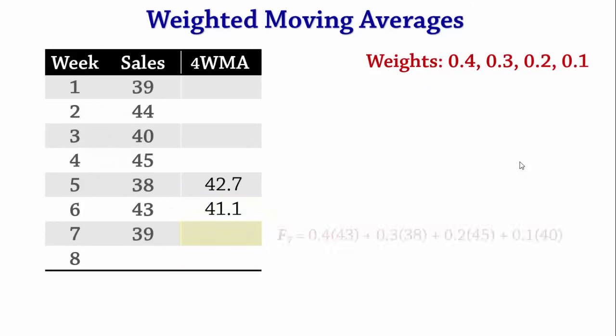For week 7, the Weighted Moving Average is 0.4 times 43, plus 0.3 times 38, plus 0.2 times 45, which gives 41.6.